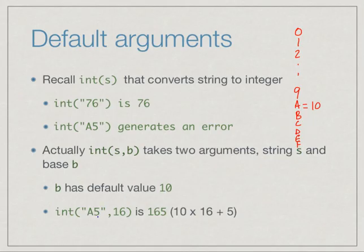If we write A5 in base 16, then this is the 16th position and this is the ones position. So we have 16 times 10, because A is 10, plus 5. In numeric terms this will return 165 correctly.